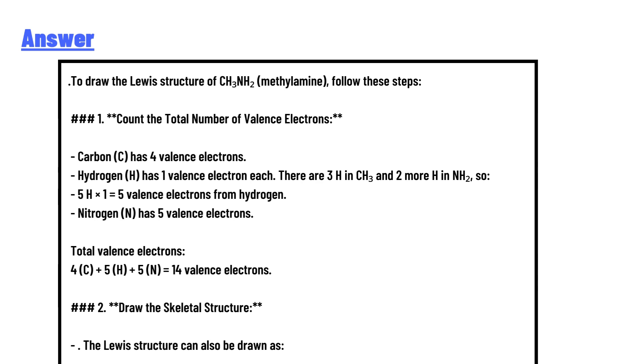Nitrogen (N) has 5 valence electrons. Total valence electrons: 4 + 5 + 5 = 14 valence electrons.